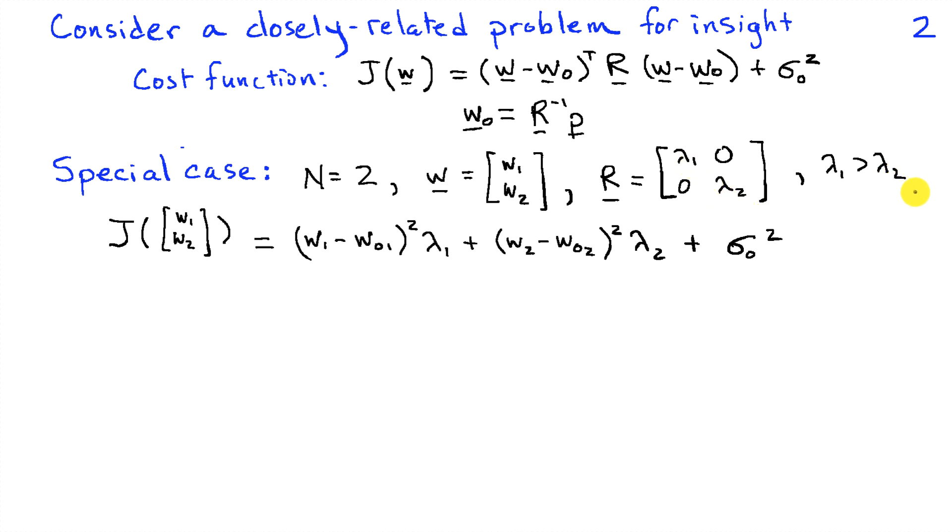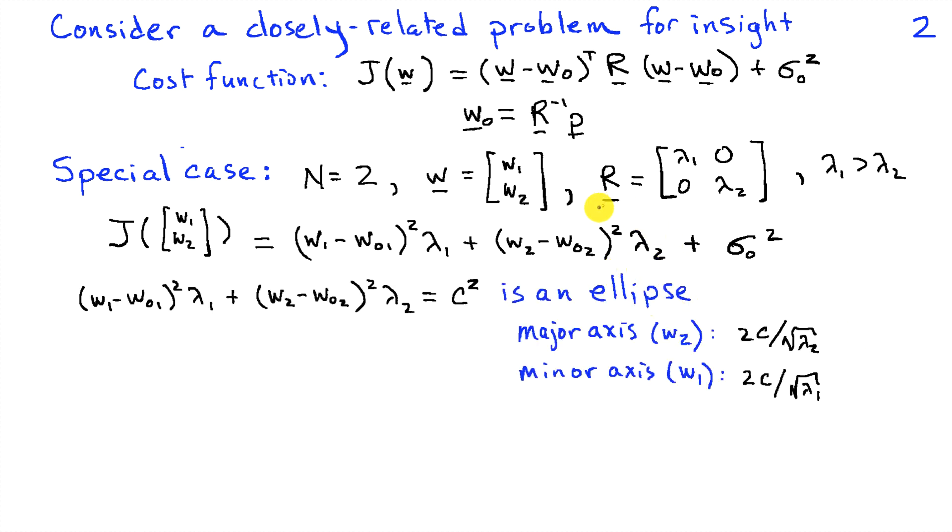Furthermore, I'm going to assume that R is a diagonal matrix, where lambda 1 is greater than lambda 2, and both these have to be positive. So if I write out the cost function for this special case, I see that it simplifies to W1 minus W01 squared times lambda 1 plus W2 minus W02 squared times lambda 2 plus sigma zero squared.